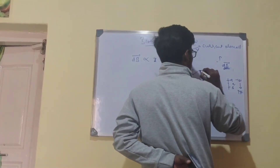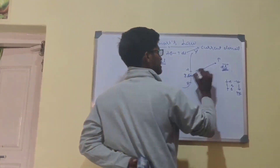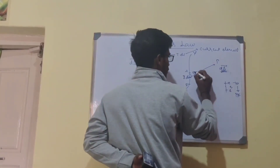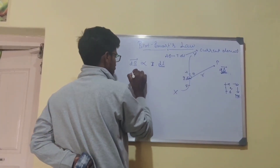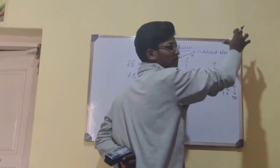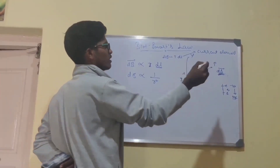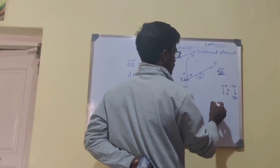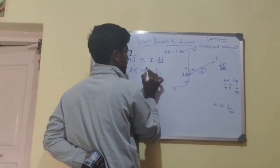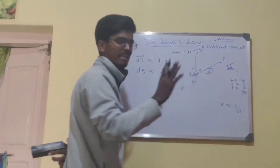If I join point P from the current element, P is at a distance r from the current element, and this line will make an angle theta with the current element dl (or ab). This dB at point P is inversely proportional to the square of the distance r from the current element to that point. This is similar to Coulomb's law — in case of Coulomb's law, the electric field is inversely proportional to r². Similarly, in this case, the magnetic field dB is inversely proportional to the square of the distance between them. It also follows the inverse square law.